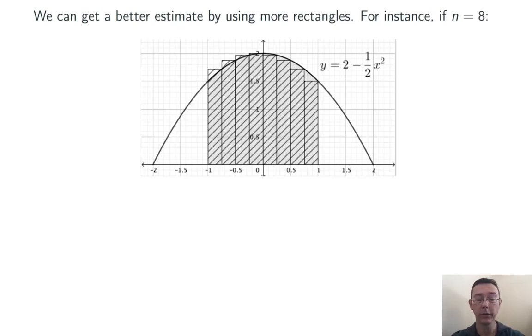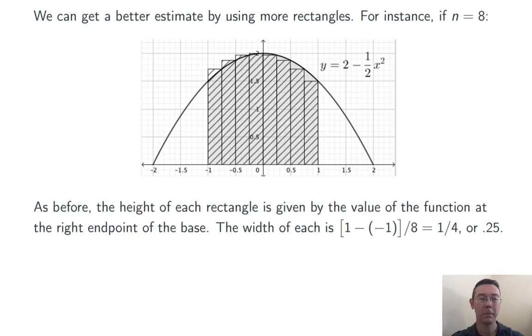So the heights are going to be, for example, f of negative 0.75, f of negative 0.5, f of negative 0.25, and so on. Notice that the widths are all the same, and so we can find that just by taking the total width of the interval, 2, and dividing it by the number of rectangles, 8. So the width of each of these rectangles is going to be 0.25.